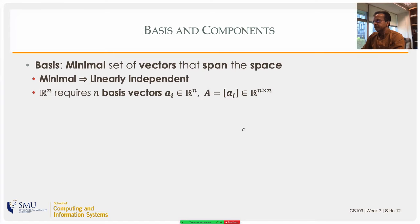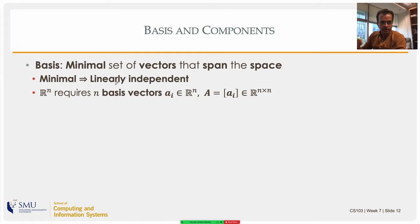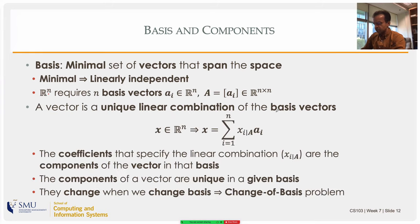Let's recap basis and components once more. A basis is the minimal set of vectors to span that space, which means basis vectors are linearly independent — otherwise it won't be a minimal set. Any vector in that space can be expressed as a linear combination of the vectors in the basis set. In R^n, if you have n components for all vectors, you need n basis vectors. A vector is a unique linear combination of the basis vectors.